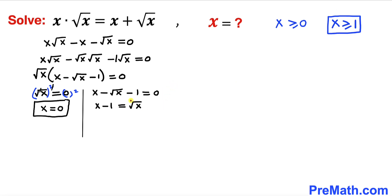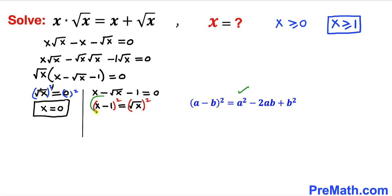Let's undo the square root by squaring both sides of x minus 1 equals square root of x. Recalling the identity (a minus b) squared equals a squared minus 2ab plus b squared, the left hand side expands to x squared minus 2x plus 1. On the right hand side, the square and square root cancel, leaving simply x.